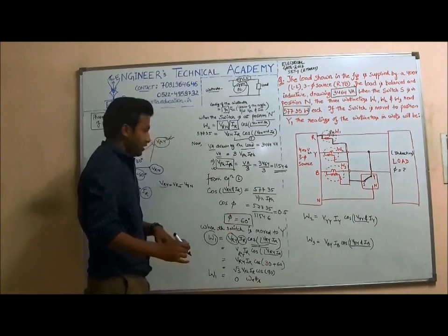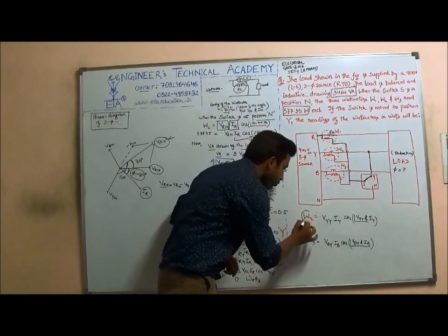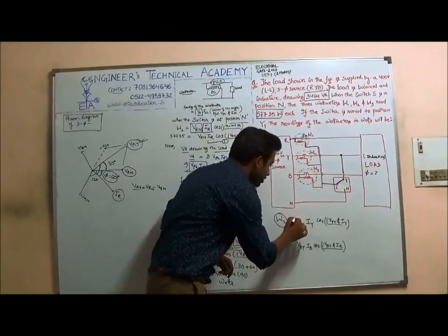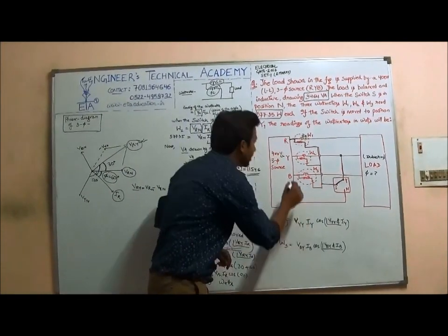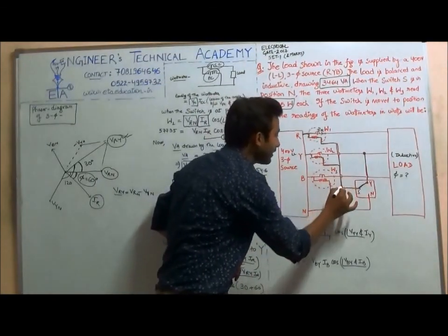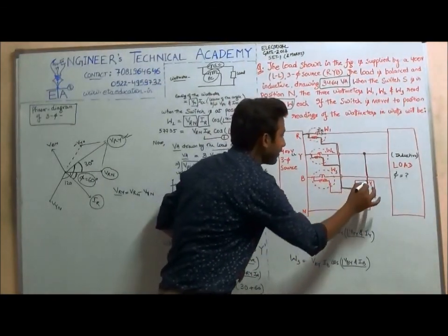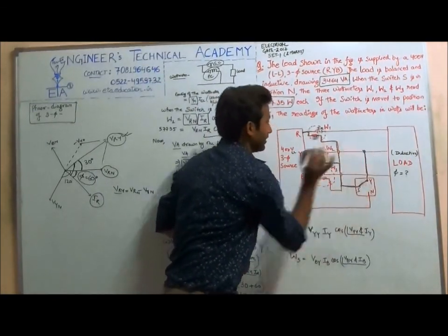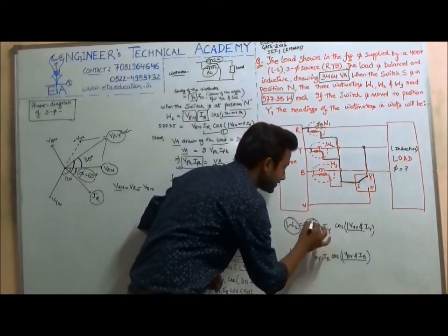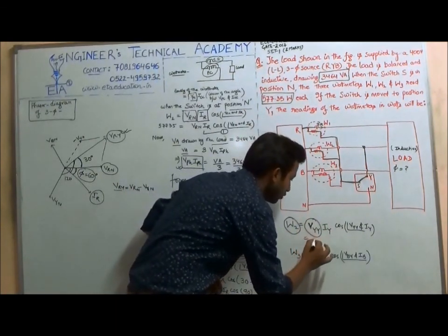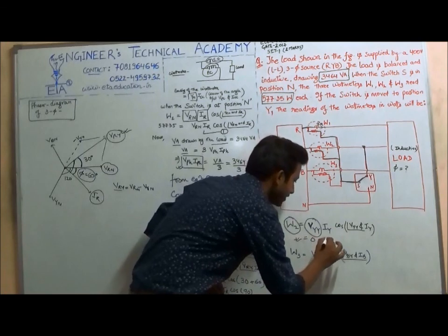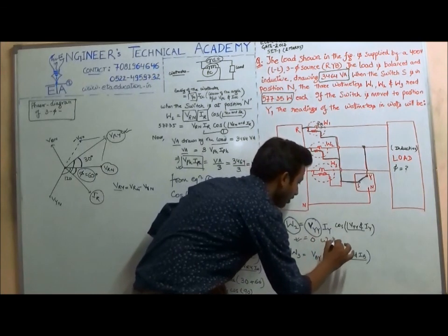For watt meter W2, the pressure coil is connected between Y and another terminal, giving a voltage of VYN or similar. The resulting angle also leads to cos(90°) = 0. Hence watt meter W2 will also read 0 watts.